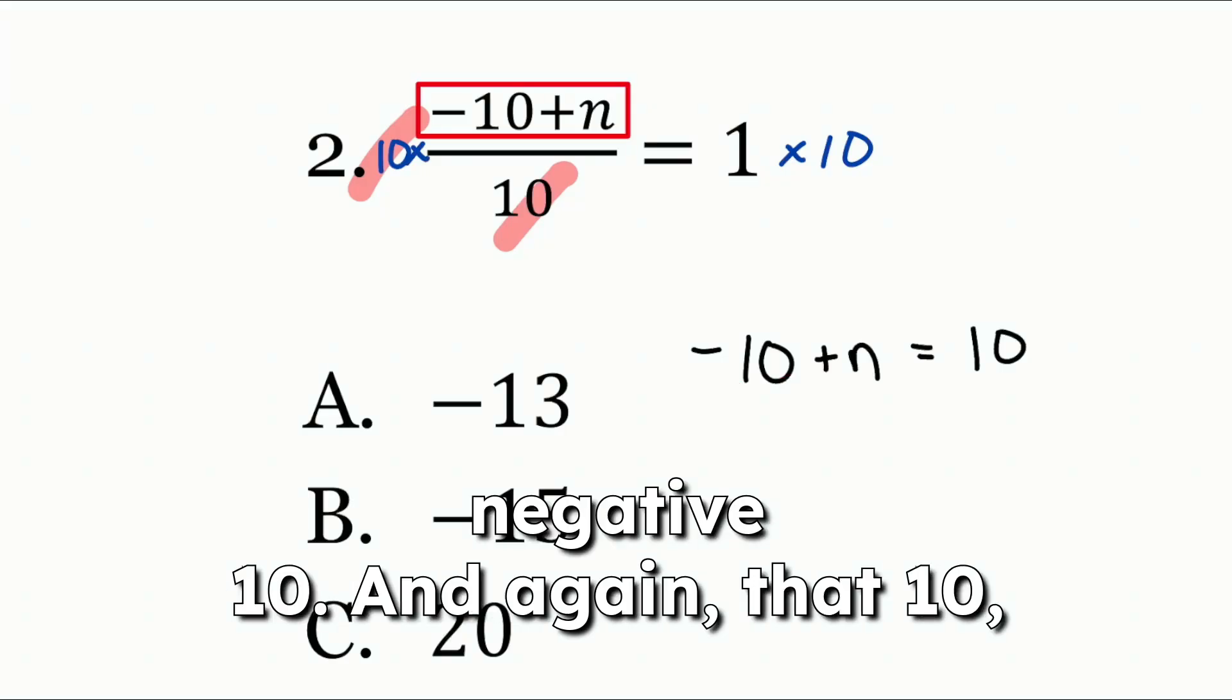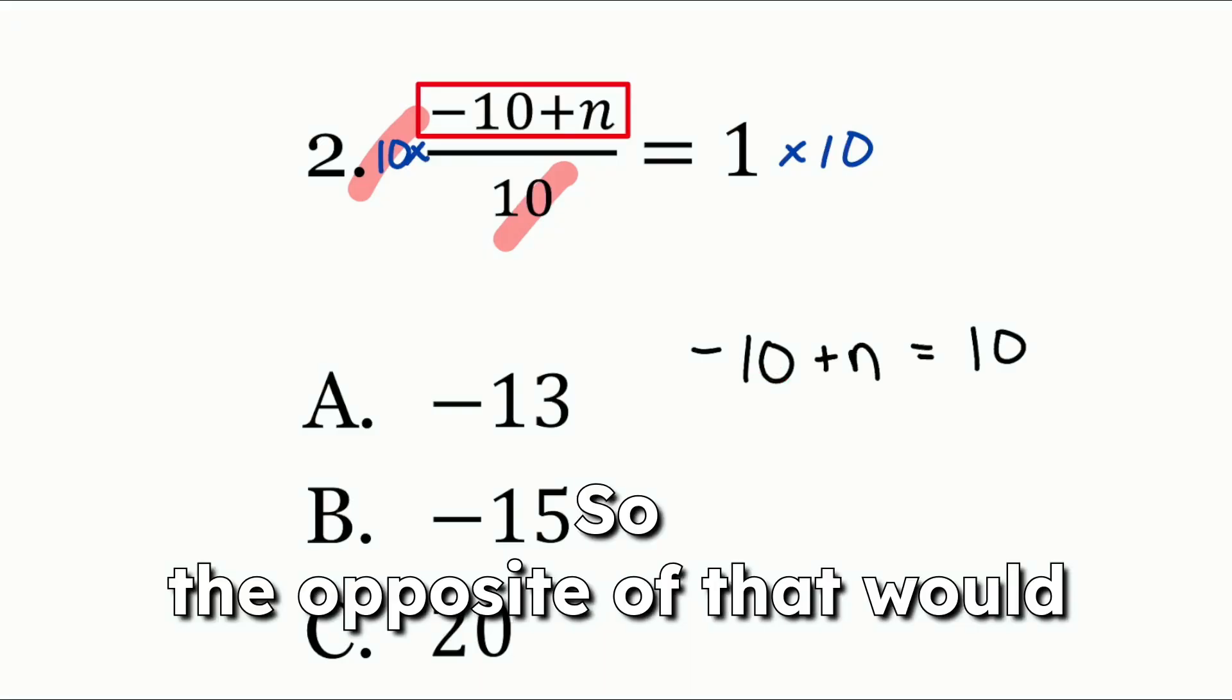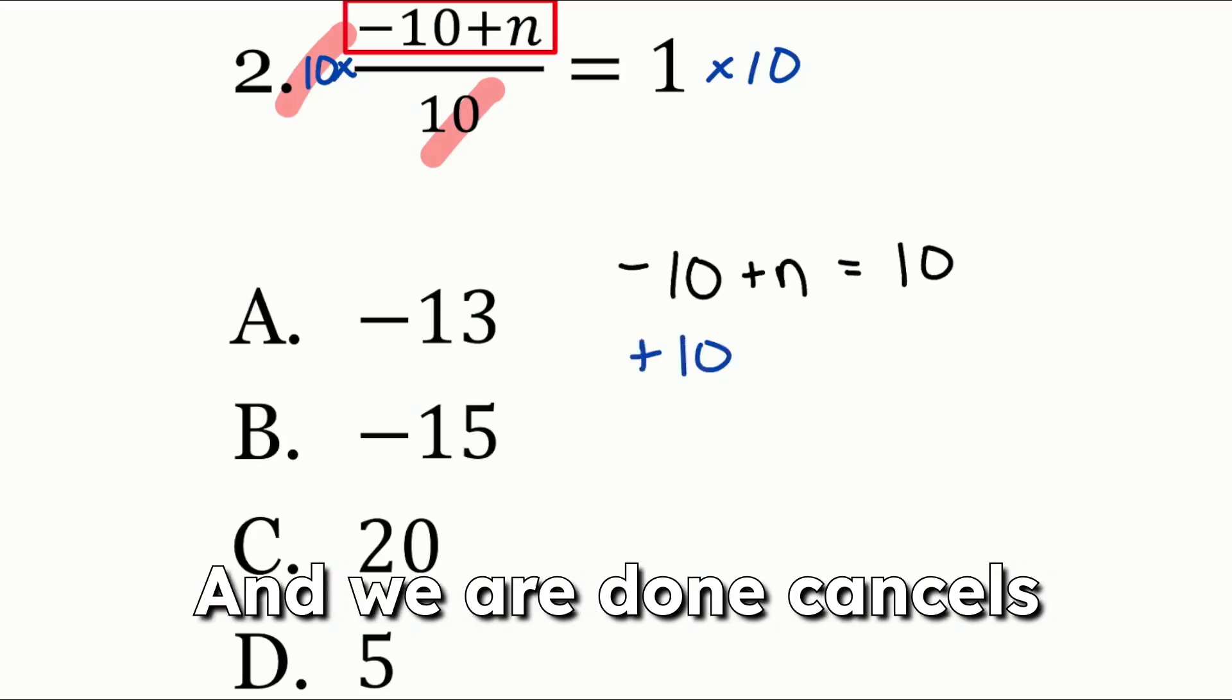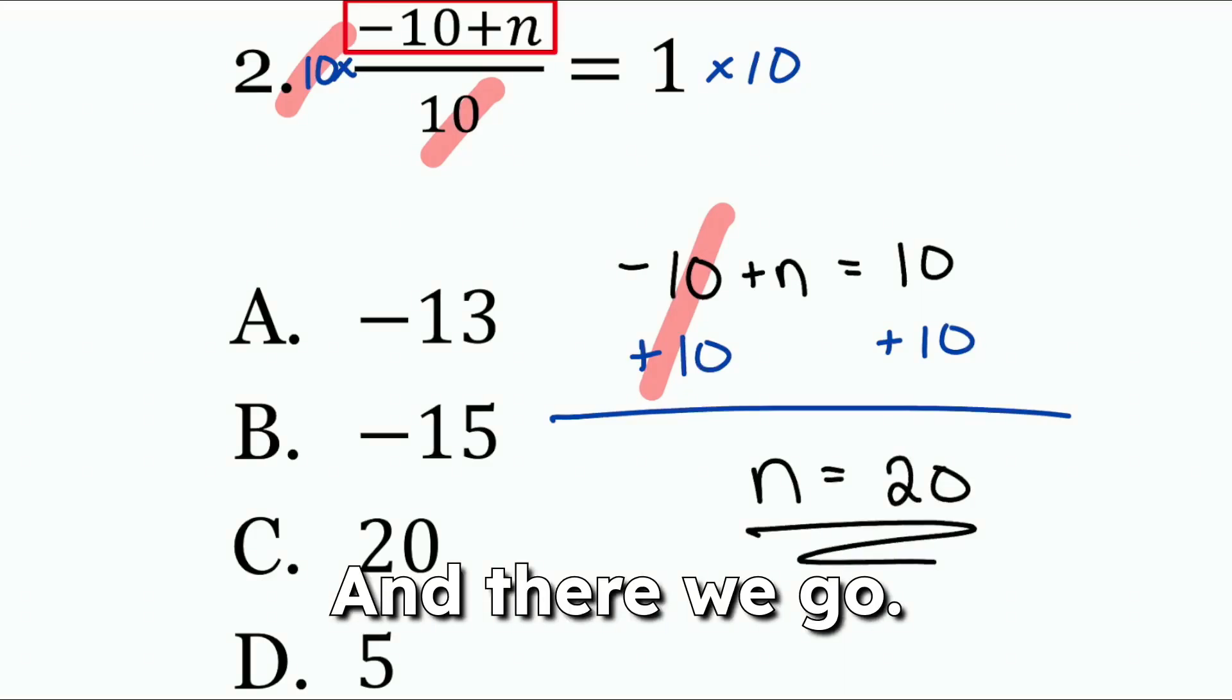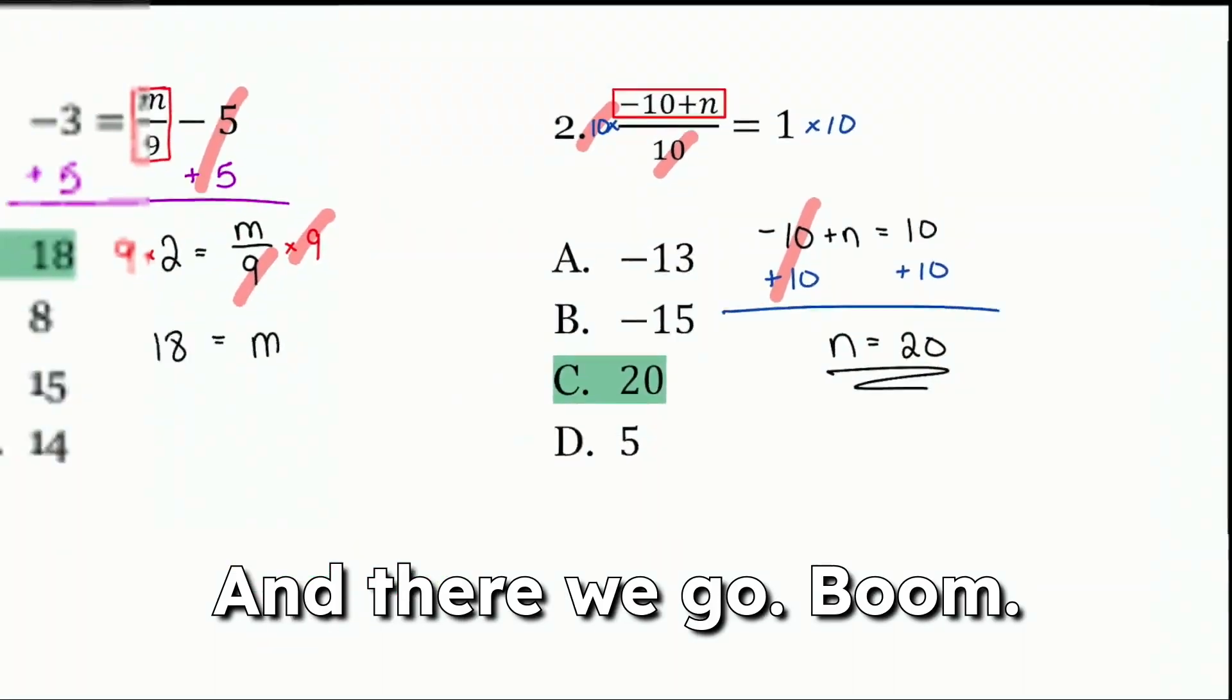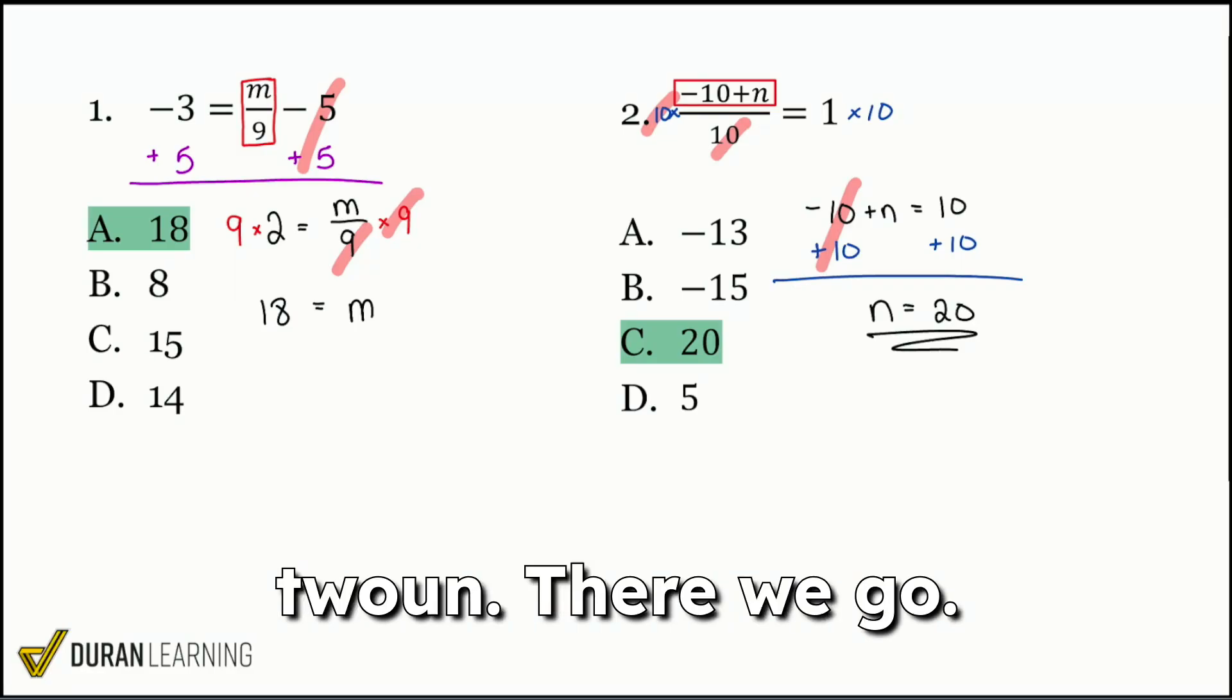Now that we're here, the next step that we'll take will be to get rid of that negative 10. And again, that 10, that negative 10 that's just sitting there, we can treat that as subtracting 10 or minus 10. So the opposite of that would be adding 10 to both sides and we are done. Cancels out on the left side, leaving us with N equals 20. And there we go. And our answer here is C. And there we go. Boom. There's number one and number two. There we go.